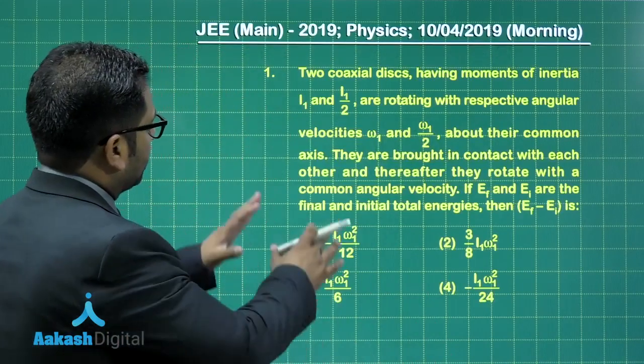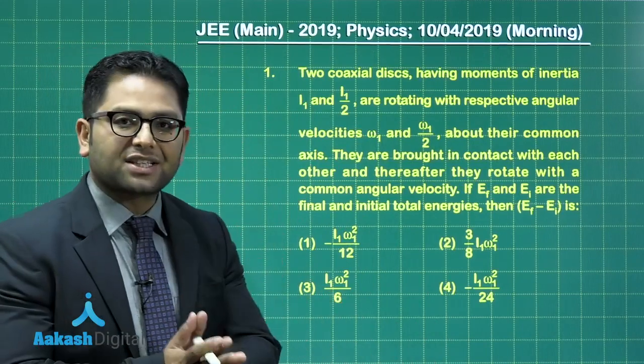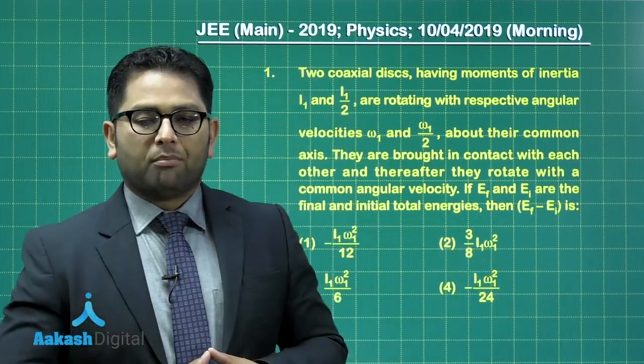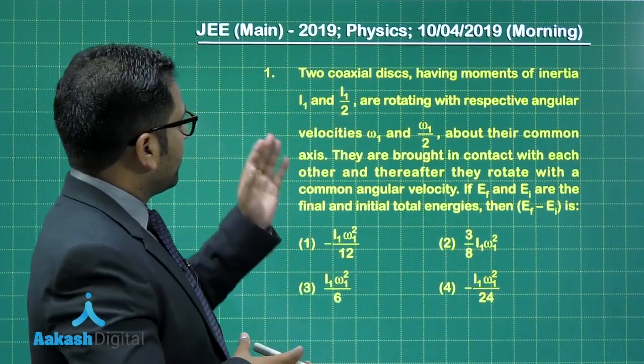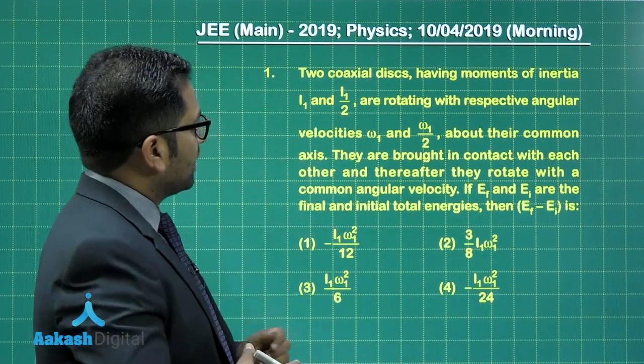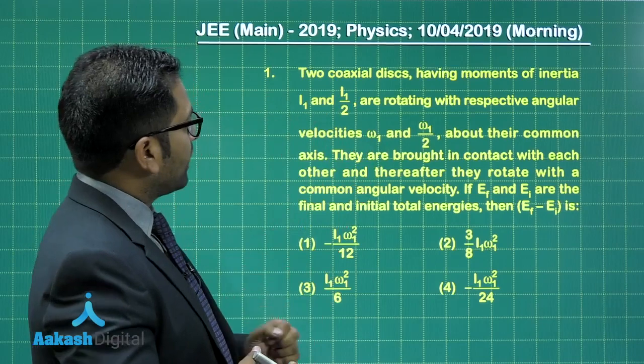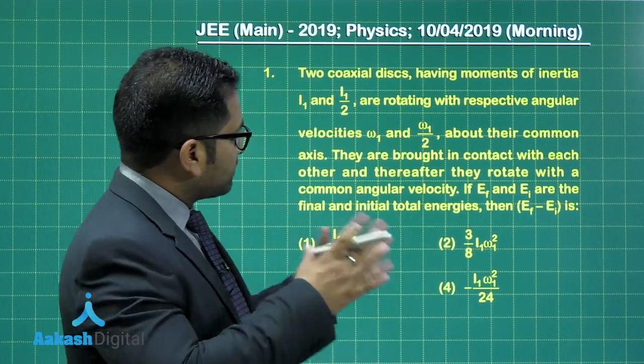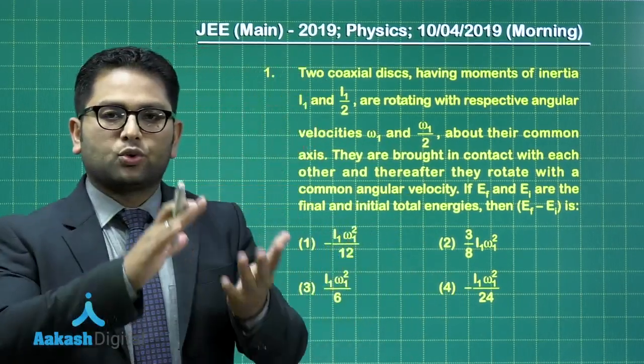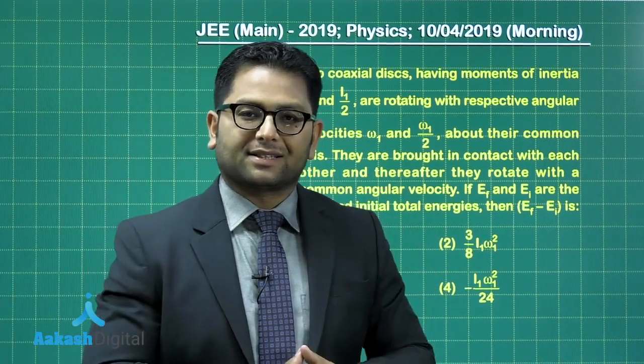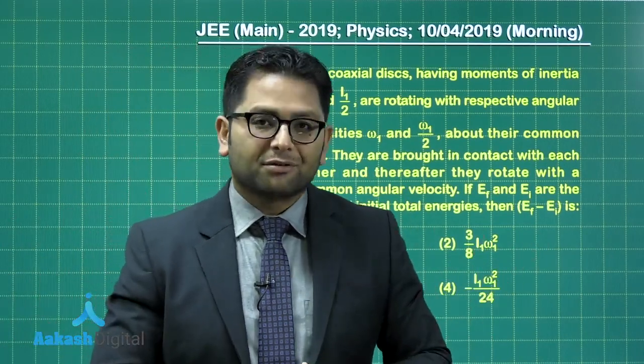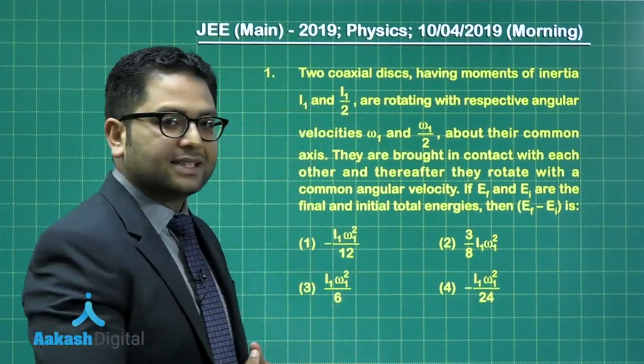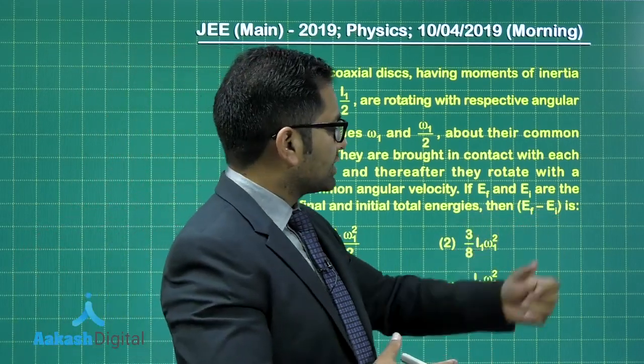the first question that has been set from the topic of rotational motion, a very straightforward question, a regular happening in the class. Moment of inertia of two disks has been given as I₁ and I₁/2. And I₁ having an angular velocity ω₁, I₁/2 having angular velocity ω₁/2. They are brought in contact and eventually the two disks acquire a common angular velocity. Yes, rather friction, which is responsible for that. And after it attains a common angular velocity, I need to calculate the loss in kinetic energy.